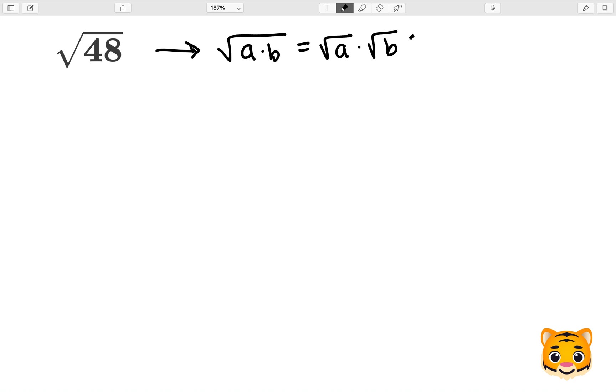This means that if we have two values multiplied by each other inside of a square root, such as a and b, we can then separate them out into their own individual square roots with multiplication between them.